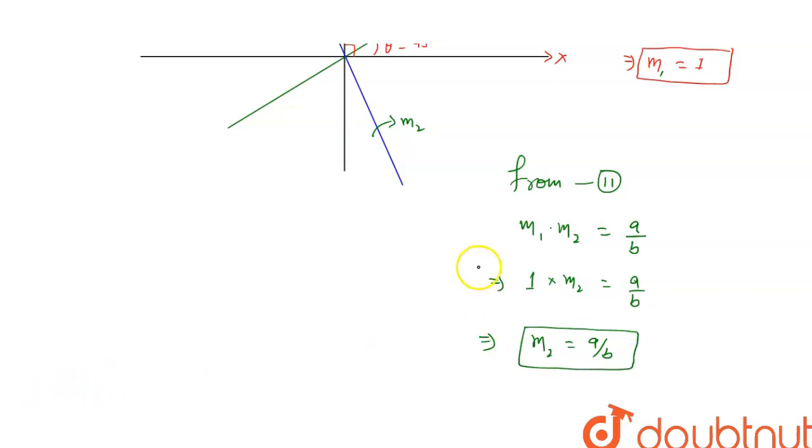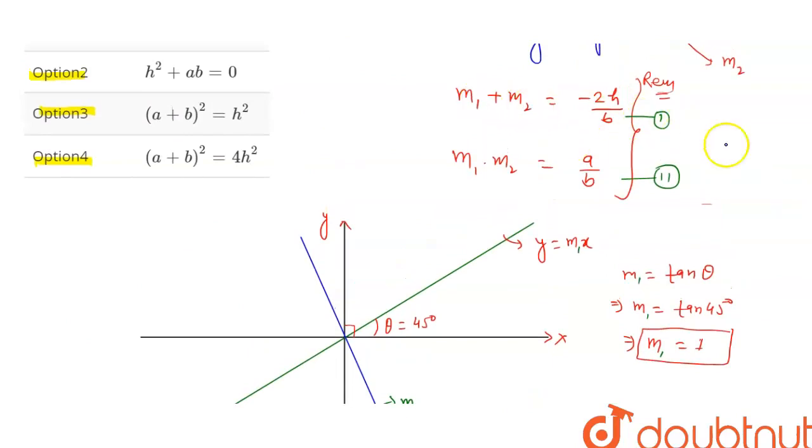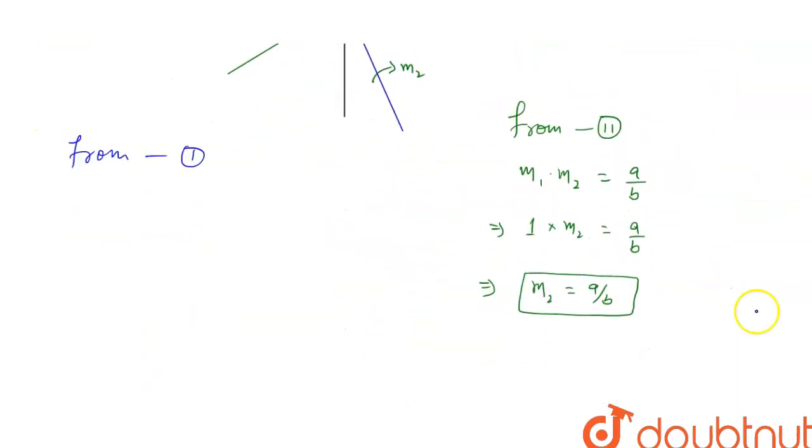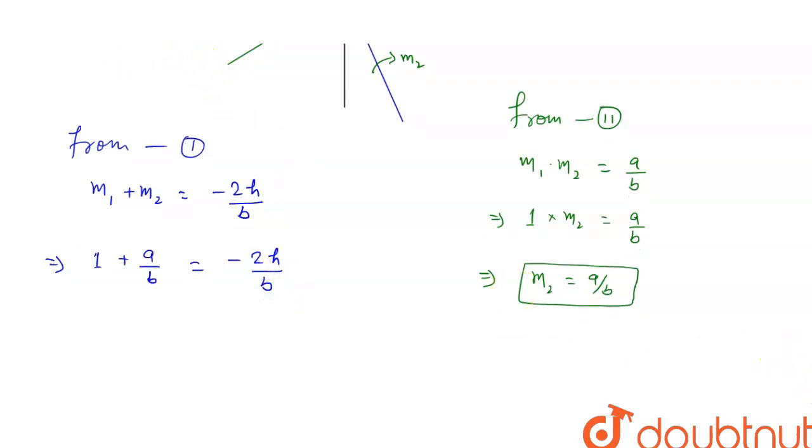Now from equation (1), we know m₁ + m₂ = -2h/b. m₁ is 1 and m₂ is a/b, so 1 + a/b = -2h/b. If you solve this, you get (b + a)/b = -2h/b.